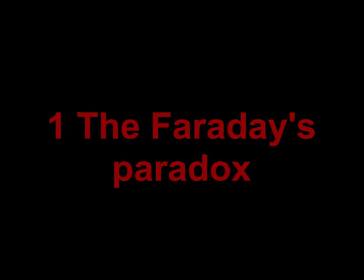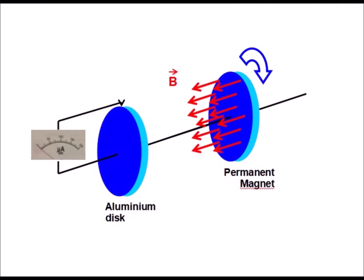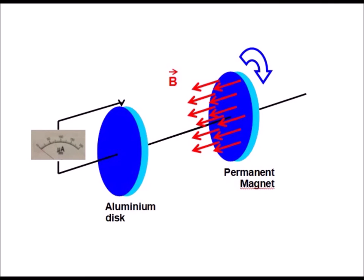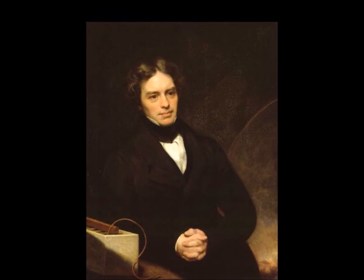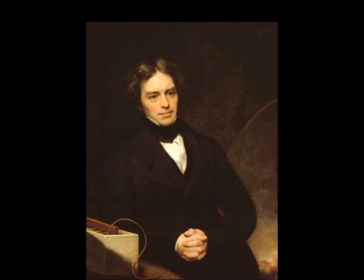A conductive disk is placed in the magnetic field of a magnet. A brush makes it possible to collect the current at the periphery of the disk. When the magnet rotates while the conductive disk is stationary, no current is detected in the disk. Faraday thought that the magnet's field, with its flux lines, remained stationary as the magnet rotated.